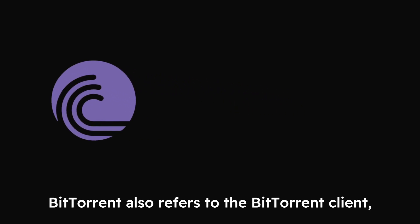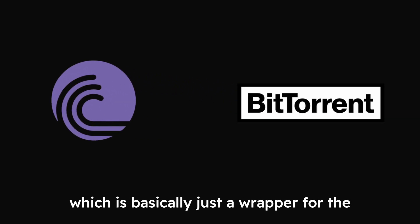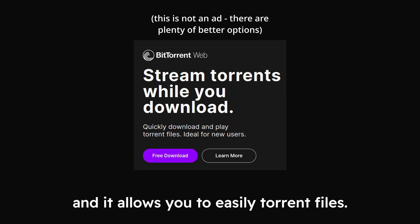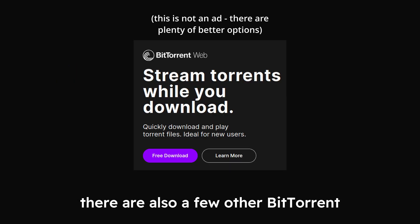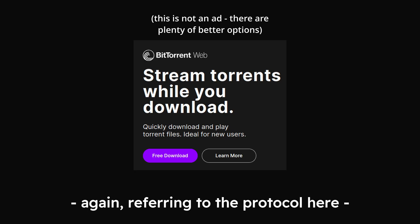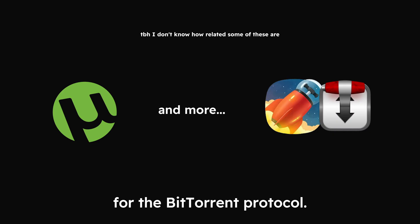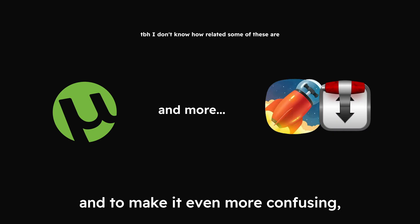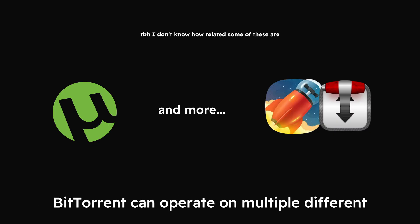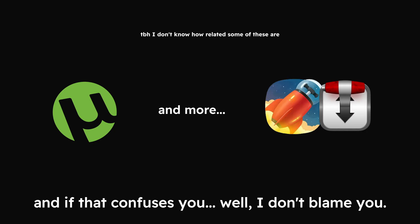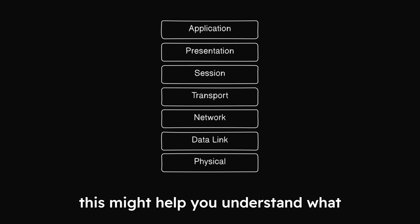But it gets even more confusing. BitTorrent also refers to the BitTorrent client, which is basically just a wrapper for the BitTorrent protocol. It has a GUI and allows you to easily torrent files. There are also a few other BitTorrent — referring to the protocol — clients like uTorrent that again act as a wrapper for the BitTorrent protocol. And to make it even more confusing, BitTorrent can operate on multiple different protocols like UDP and TCP.